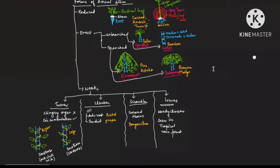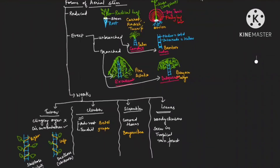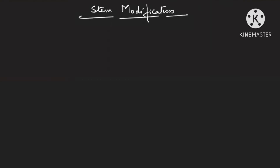Here is the entire summary for what we discussed today. Forms of aerial stems: they can be reduced, erect, or weak. If erect and unbranched: caudex and culm. If erect and branched: excurrent and deliquescent. Weak stems have four categories: twiners, clambers, scramblers, and lianas. Now let us move to the stem modifications.